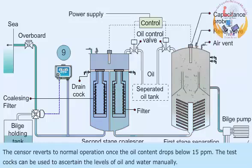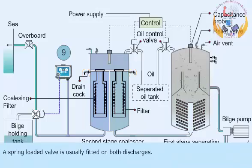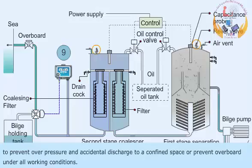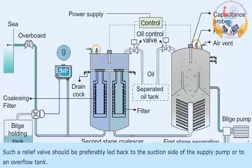The test coax can be used to ascertain the levels of oil and water manually. A spring-loaded valve is usually fitted on both discharges. However, it is essential that a relief valve be provided on the shell or incoming mixture line to prevent overpressure and accidental discharge to a confined space, or to prevent overboard discharge under all working conditions. Such a relief valve should preferably be led back to the suction side of the supply pump or to an overflow tank.